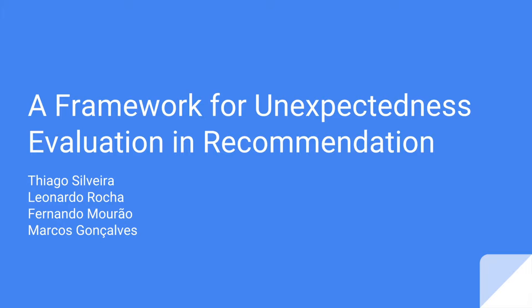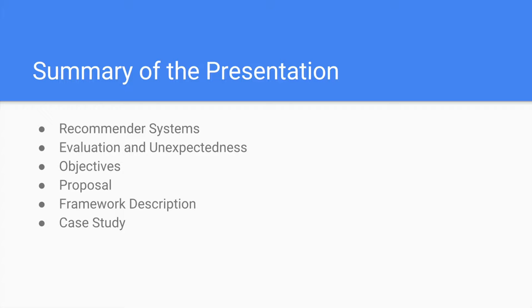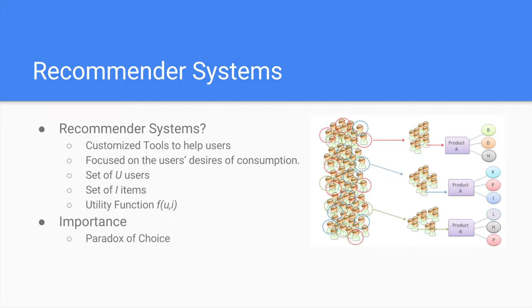So let's get started. This is the summary of our presentation. Firstly, we briefly introduce recommender systems and elaborate a discussion about evaluations in recommendations. Then we focus on the concept of unexpectedness in recommendations. We present our objectives and our proposal, describe our framework, and present a case study using the described framework.